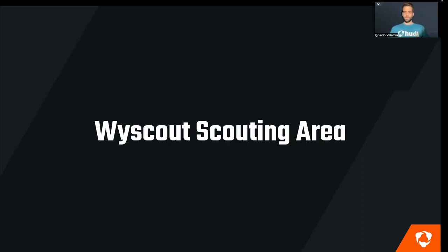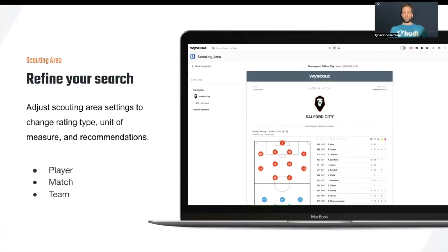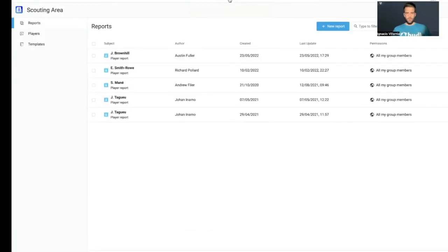Let's continue with our Wisescout scouting area. I wanted to start talking about the scouting area by noting that Francesco Totti, as Roma legend, uses Wisescout during talent identification and player evaluation processes — he's only one of the big teams and agencies who uses Wisescout on a daily basis. Scouting area is used to provide a refined search and adjust to your settings and needs during the recruiting process. You can either create reports for players, games, matches, and teams. Just remember that we get to the scouting area via our Tools button.